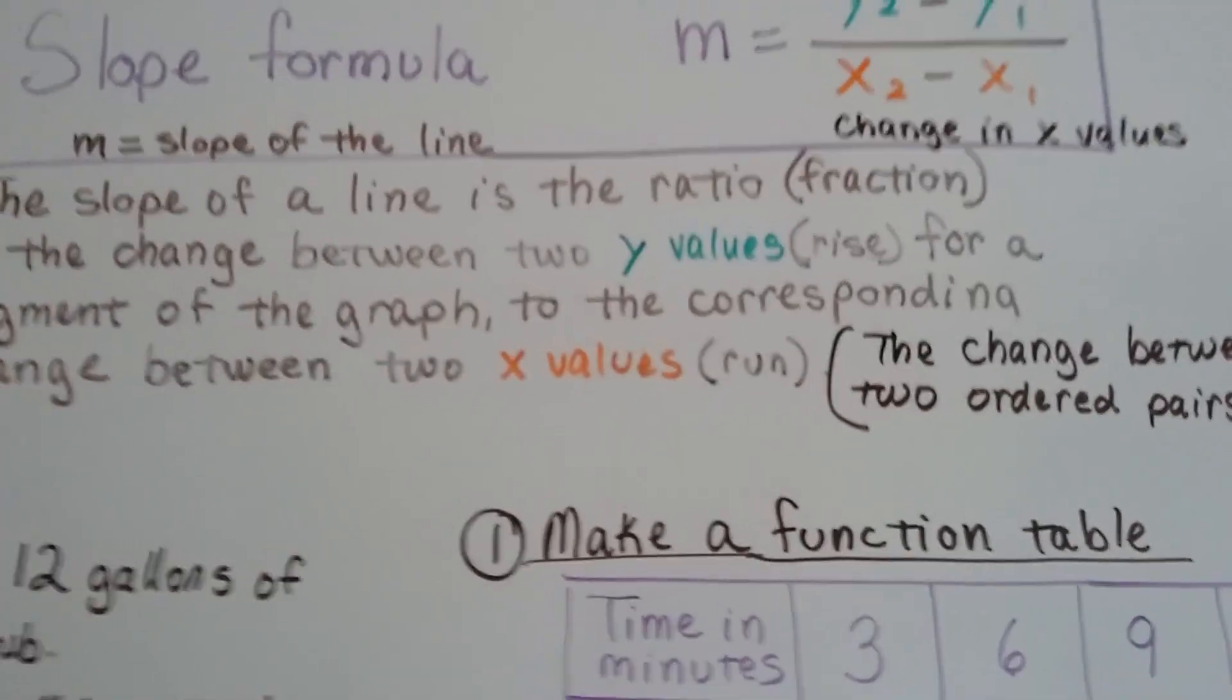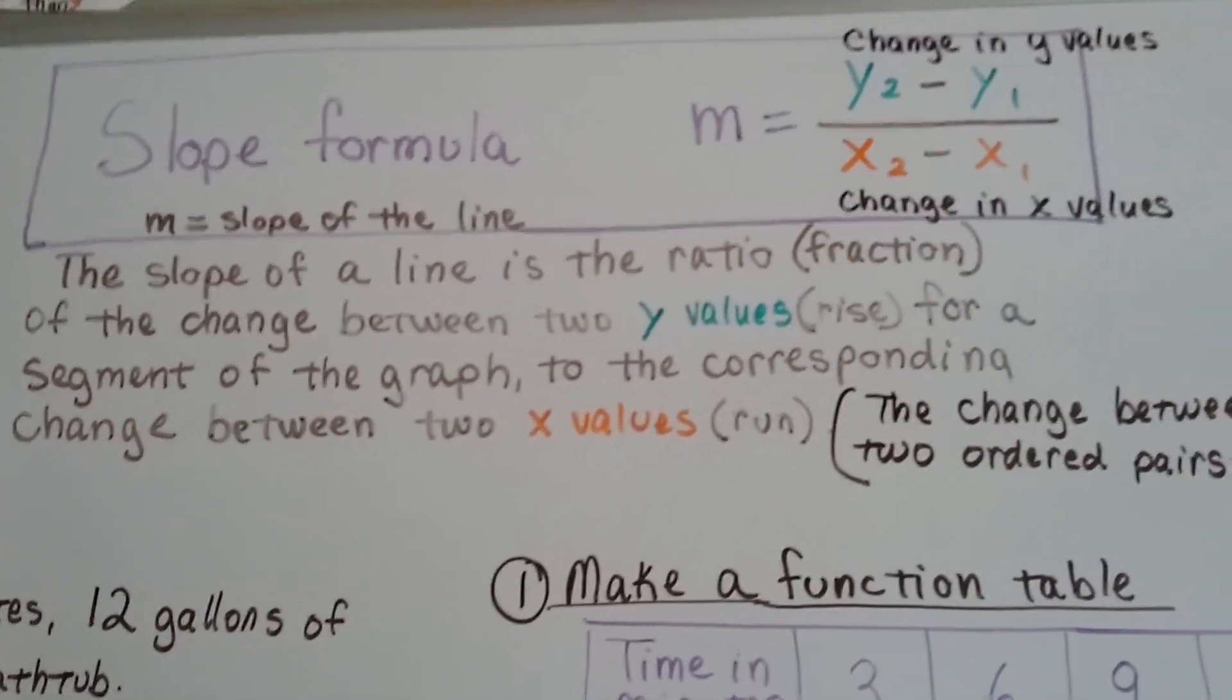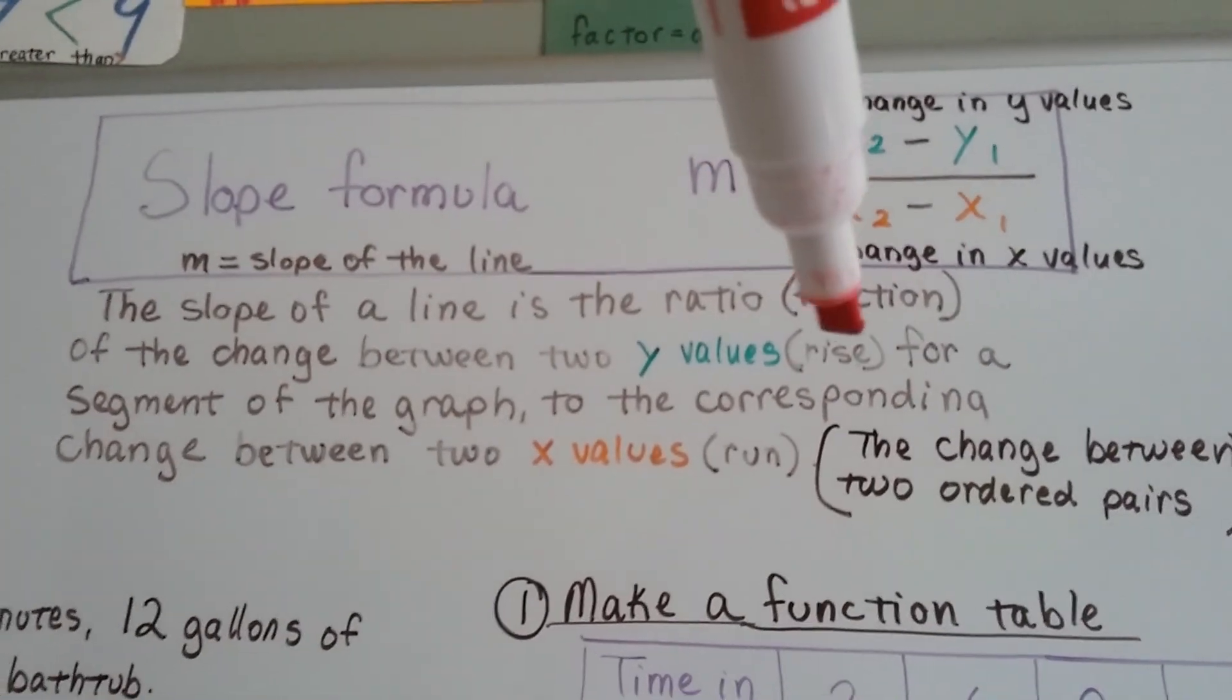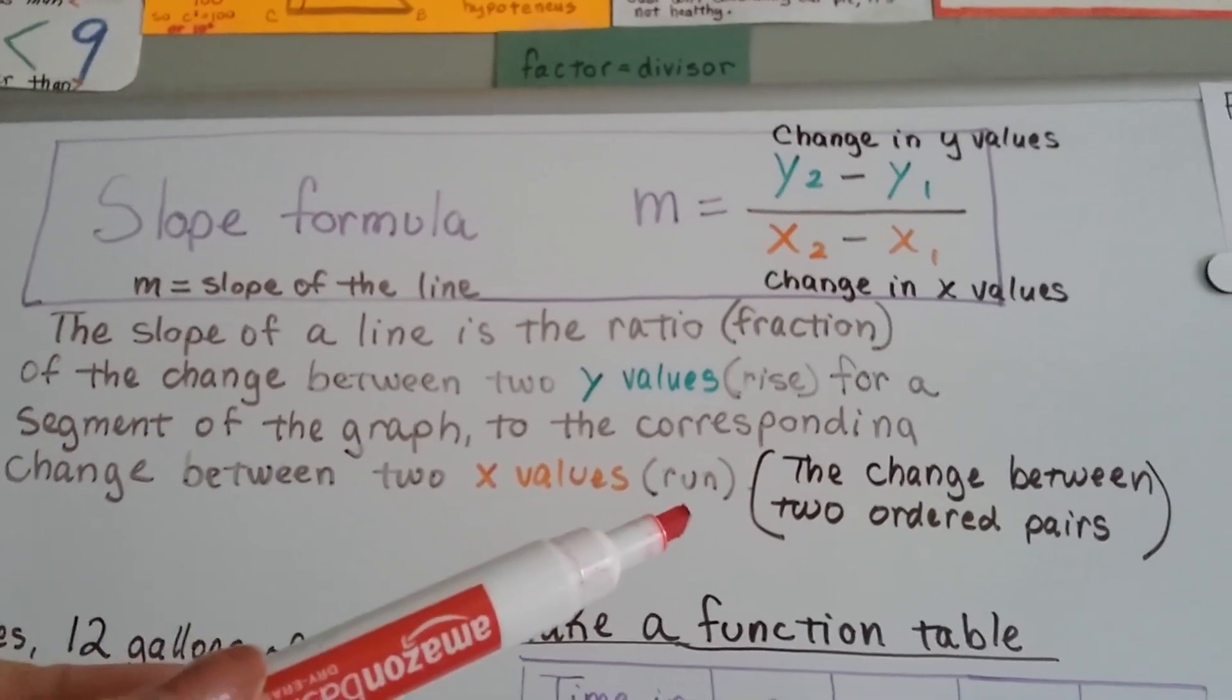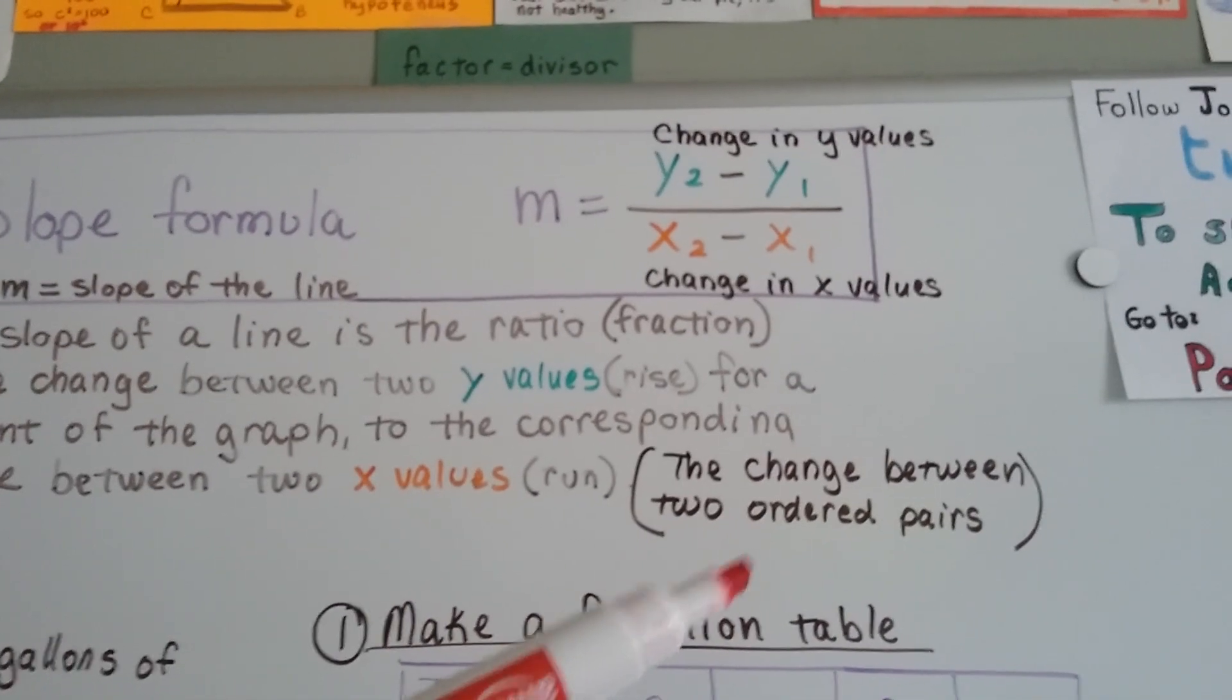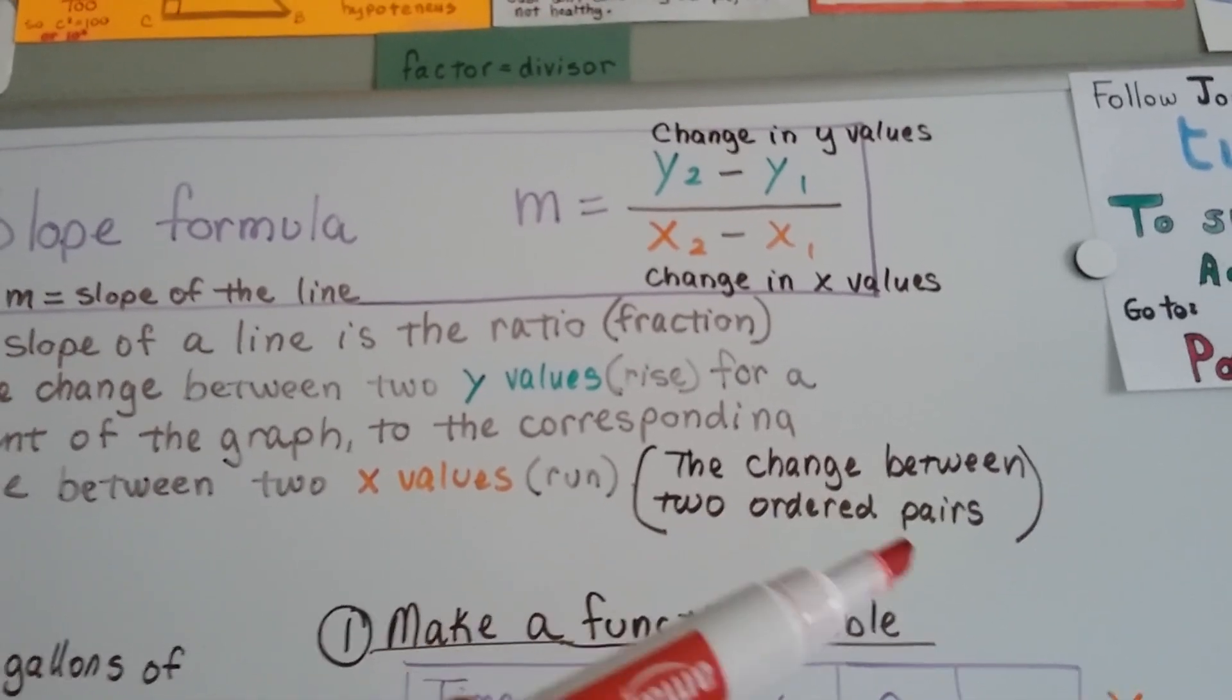The slope of the line is a ratio, it's a fraction, of the change between two y values, the rise, for a segment of the graph to the corresponding change between two x values, the run. It's a change between two ordered pairs, x and y.